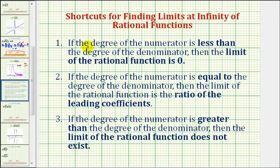First, if the degree of the numerator is less than the degree of the denominator, then the limit of the rational function is zero. That's not our case. The next possibility is our case: if the degree of the numerator is equal to the degree of the denominator, then the limit of the rational function is the ratio of the leading coefficients.